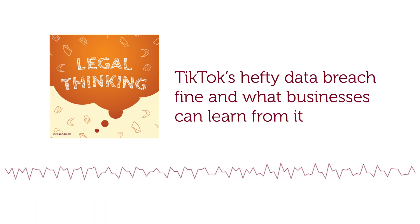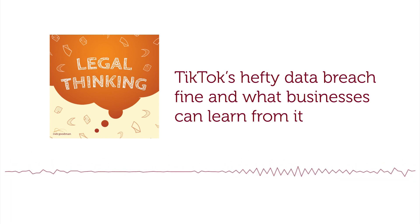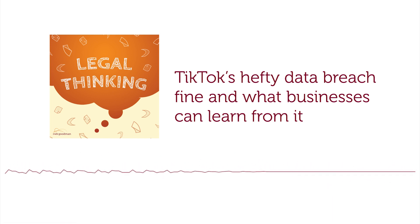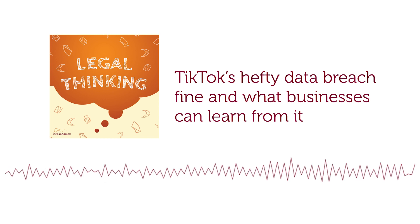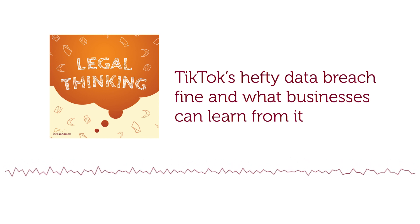The key point is that if you do identify a high risk that you cannot mitigate, then you must consult the ICO before starting the processing — that's something that shouldn't be forgotten. There's no point just carrying out a DPIA, putting it in a drawer, and doing nothing about it. If you've identified a high risk, you must consult with the ICO. Carrying out a DPIA is not just a tick-box exercise. If you're going to be genuinely compliant, you need to keep coming back to your DPIA: has the way in which the processing is carried out changed, and does that change the outcome of the DPIA? Do any other mitigations need to be put in place?